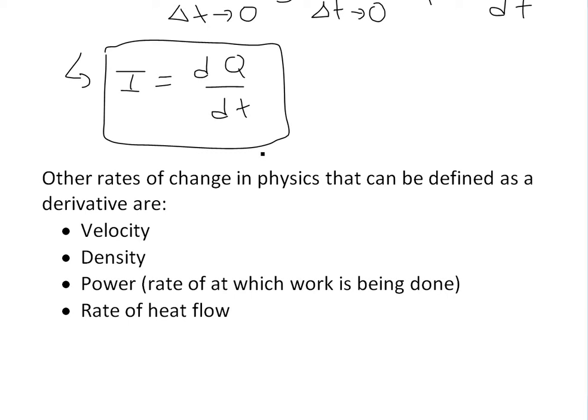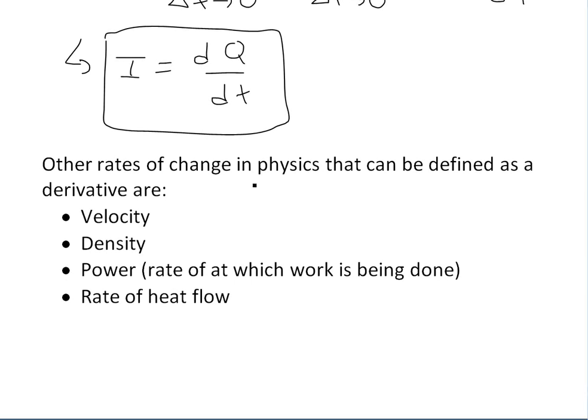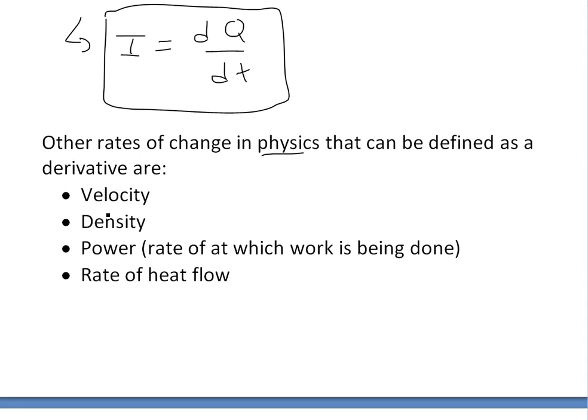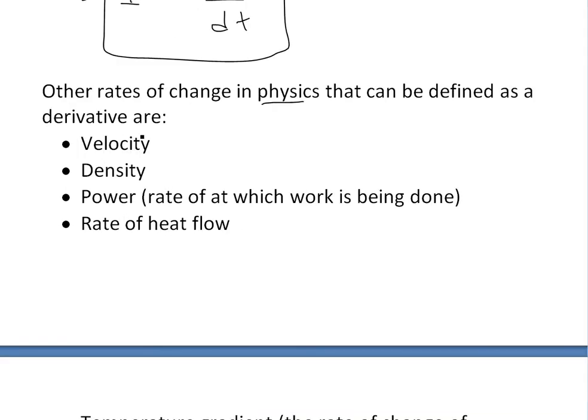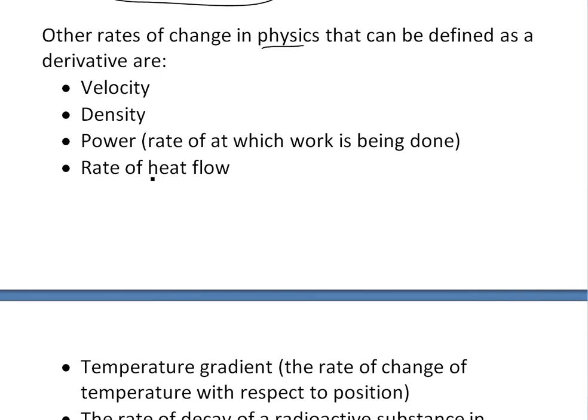Electric current's not the only rate of change that could be described as a derivative. Other ones in physics that can be defined as derivative are velocity - I've done that earlier. Density, I went over linear density in my earlier videos. You can see these in the video links below. I haven't gone over these ones though.